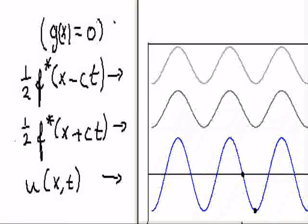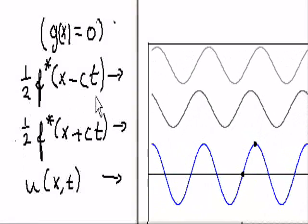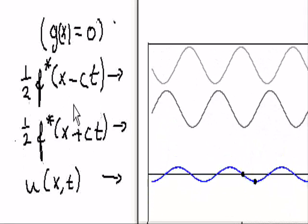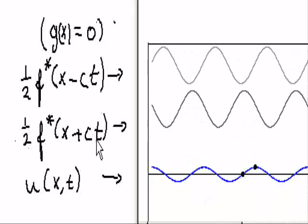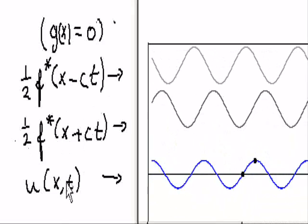can be considered as a sum of two functions. One function moving to the right, this f* of x minus ct, and another moving to the left.